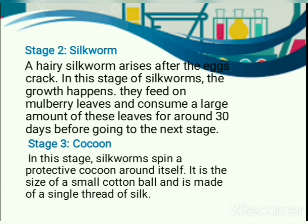In the third stage, silkworms spin a protective cocoon. It is the size of a small cotton ball and is made of a single thread of silk.